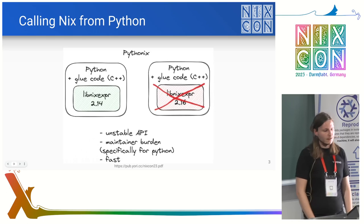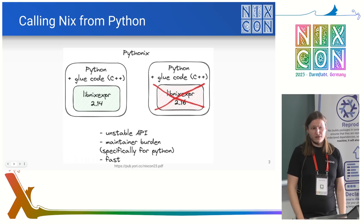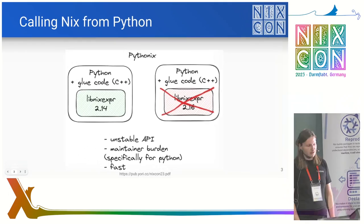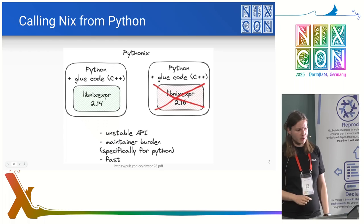Basically, you can link the Nix interpreter directly into your own code. This existed for a while — it was written by MIG92, I think in 2017. There's a thing called Pythonix. You import that, then you tell it you want to evaluate this specific Nix code and get the JSON output. If you do it again, it will cache it and be pretty fast.